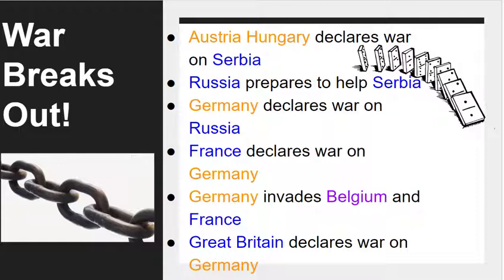That date — August 1st — will come into play later when we look at the close of the war. Russia then looked to its ally France for help. Germany didn't even wait for France to react; two days after declaring war on Russia, Germany also declared war on France. Soon after, Great Britain declared war on Germany, and much of Europe was ready to lock into battle.